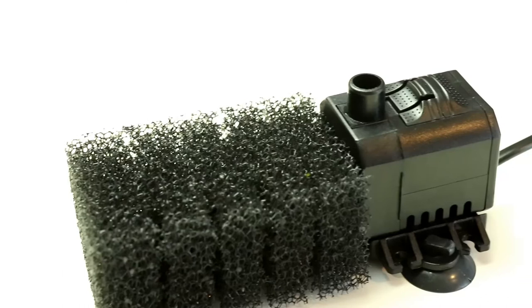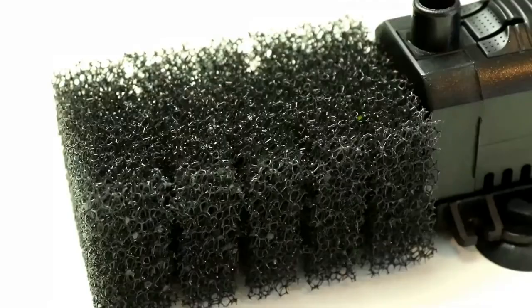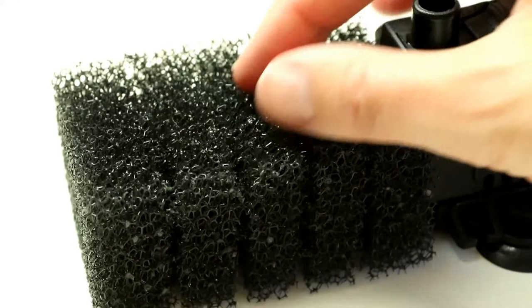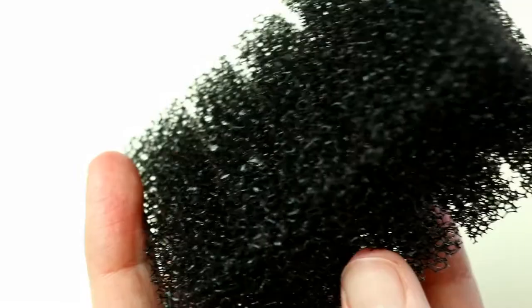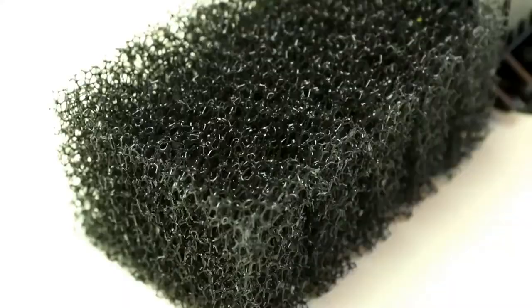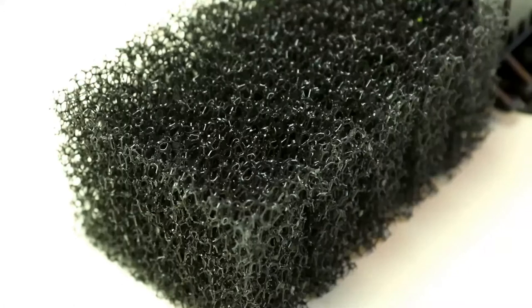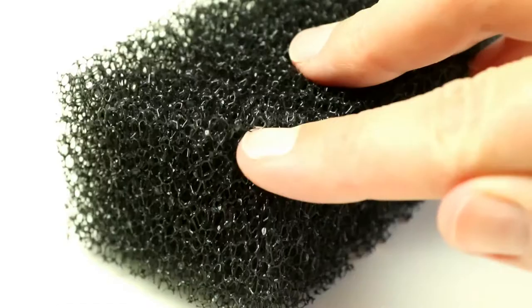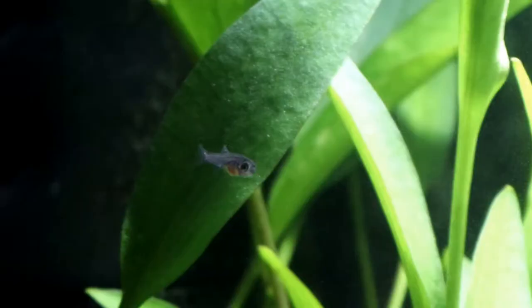The sponge itself is perhaps a slight disappointment. It is rather small and it would be inadequate for anything smaller than the smallest of nano tanks really. Mine's 19 liters so it'll be fine for in there but any larger than 30 liters and you would definitely need to get a bigger sponge quite quickly. And the sponge itself has quite large holes and while it certainly wouldn't be any risk to adult shrimp or adult small fish,